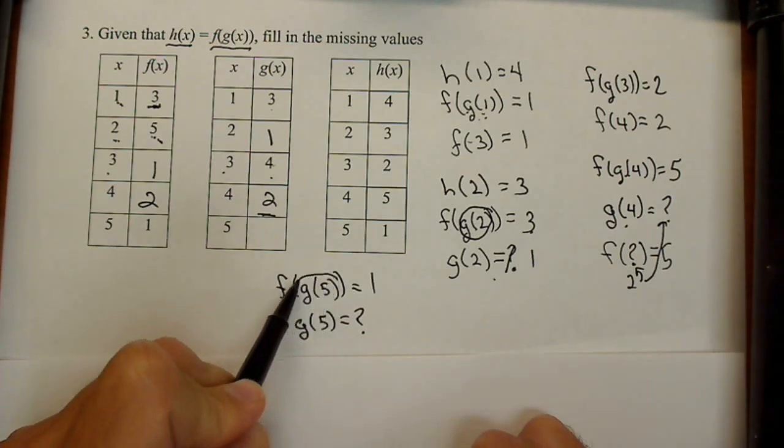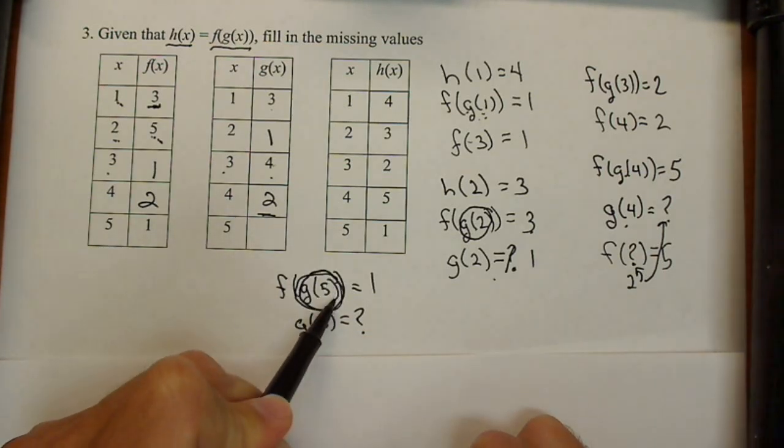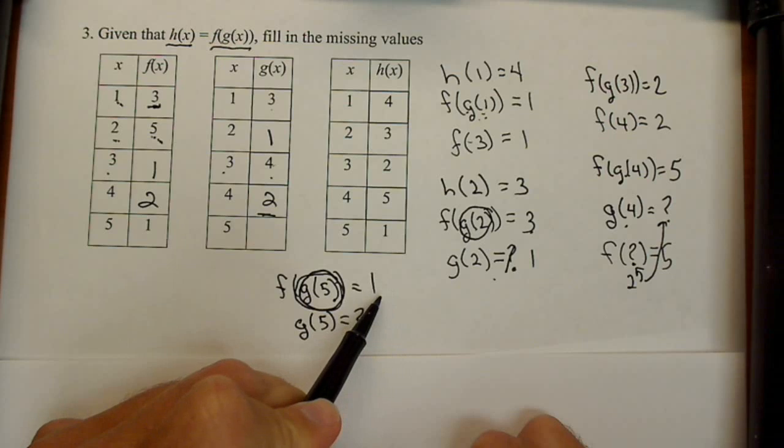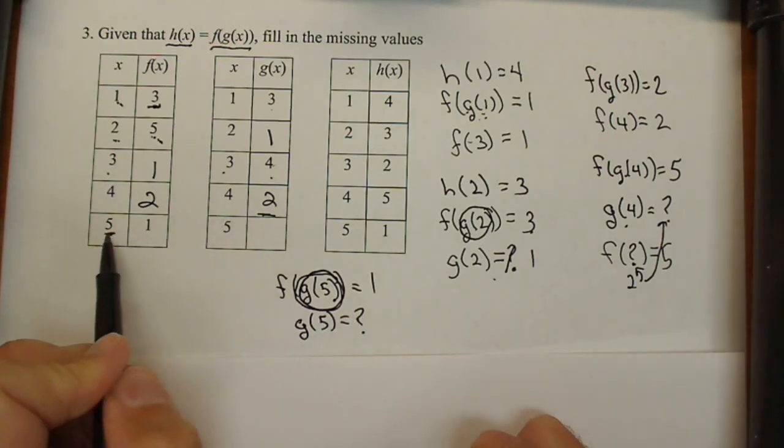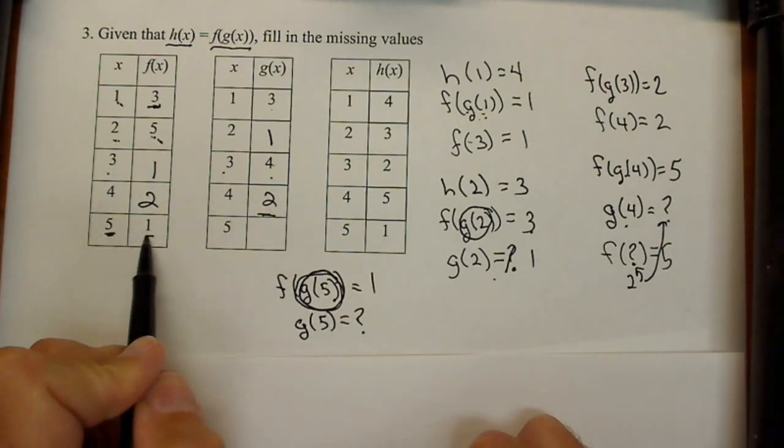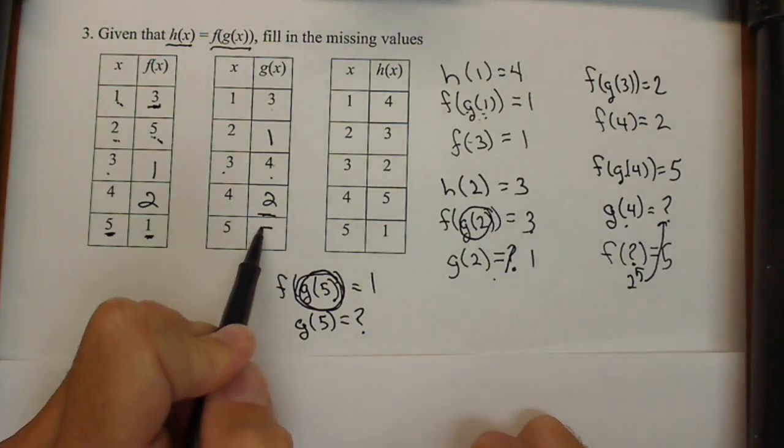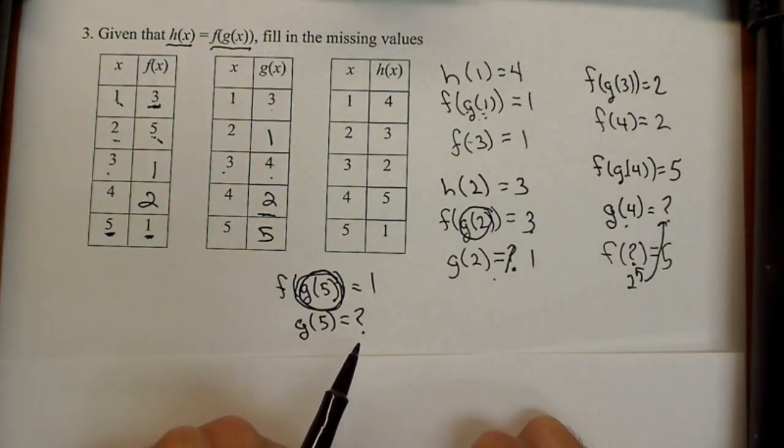Well, putting 5 into f gives 1 as an output, so g(5) must be 5. So that's how we can use the definition of composition to find these middle pieces.